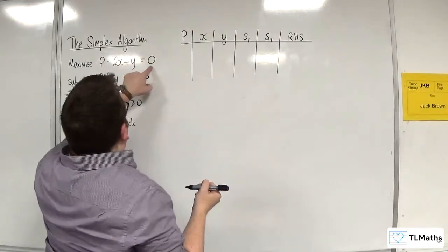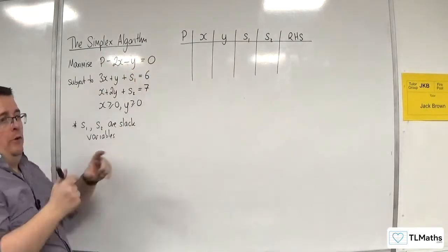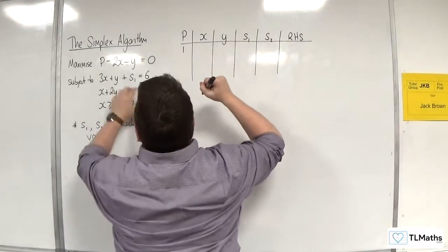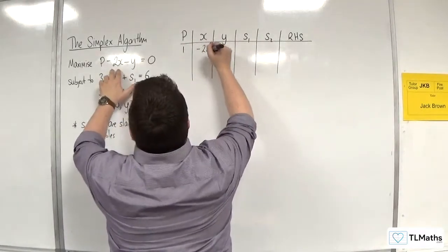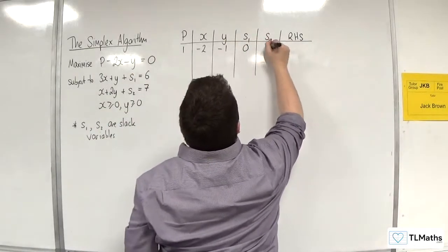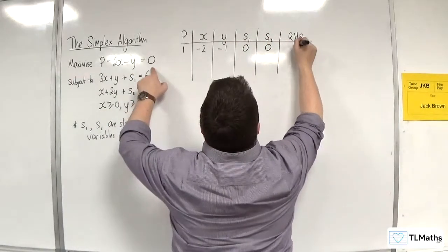So the first bit here, the objective function goes on your top line. So you've got one lot of P, minus two Xs, minus one Y, no S1s, no S2s, and the right-hand side is zero.